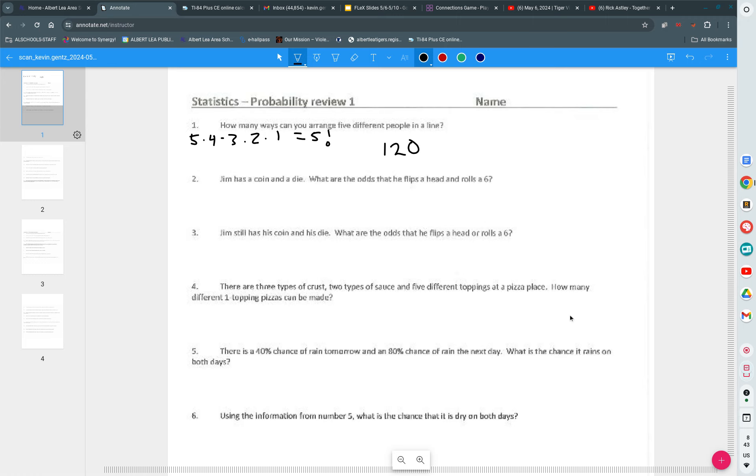Jim has a coin and he has a die. What are the odds that he flips a head and he rolls a six? Flips a head. What are the odds? 50-50. So flips a head is one out of two. How about rolls a six? What is the odds of rolling a six? One out of six. So one out of 12 are the odds that he both flips a head and rolls a six.